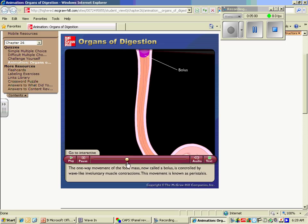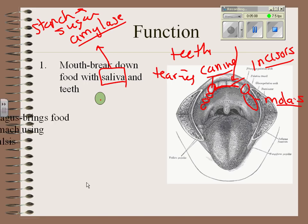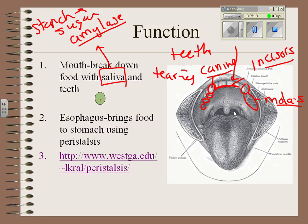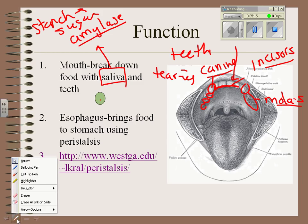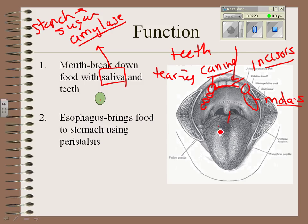Then food moves into your esophagus and along into your stomach. The uvula — that little dangly thing in the back of your throat — helps close off the opening to your nose when you swallow. Once you swallow food, the esophagus brings food to your stomach using peristalsis.